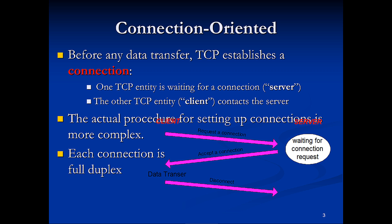The concept of connection-oriented means that before any data is transferred, TCP will establish some type of connection. One TCP entity is waiting for a connection — some type of server — and the other TCP entity would be a client. So essentially, we will request a connection, accept a connection, and then disconnect.